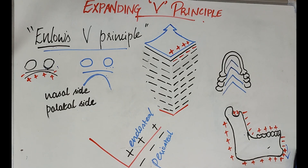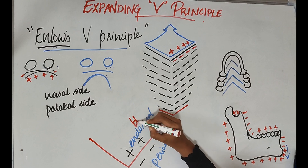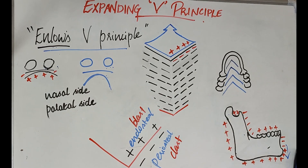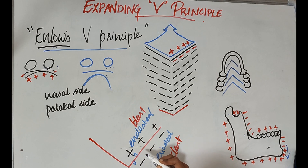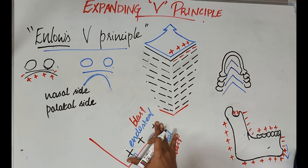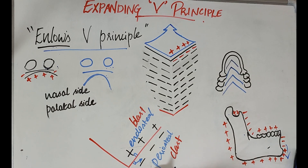The endosteal surface is lined by osteoblast cells and the periosteal surface is lined by osteoclast cells — the bone-resorbing cells. Thus bone deposition occurs on the inner aspect and bone resorption on the outer aspect. This was further proved in an implant study where implants placed on the periosteal surface showed bone resorption and detachment, while implants on the endosteal surface did not detach due to bone deposition occurring there.